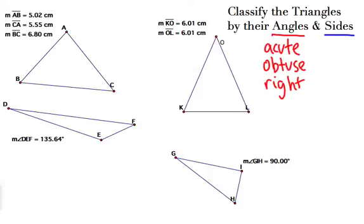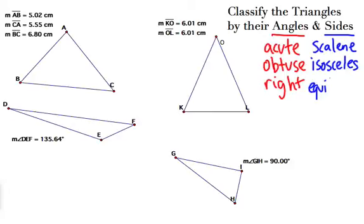For the sides, we have scalene, which means none of them are the same. We have isosceles, which means two of them are the same. And then we have equilateral, which is obviously all of them are the same.